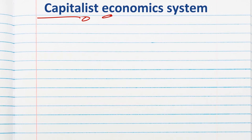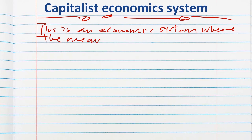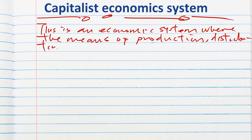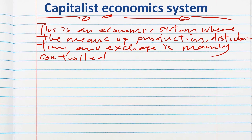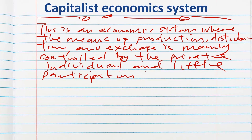Let's start with the capitalist economic system. What do we refer to as a capitalist economic system? This is an economic system where the means of production, distribution, and exchange is mainly controlled by the private individual, with little participation by the government.